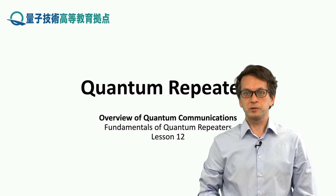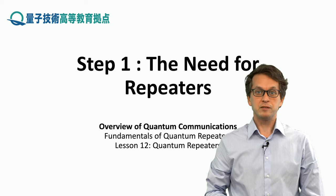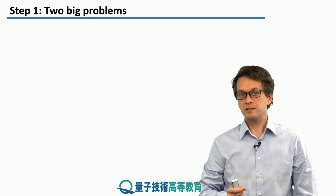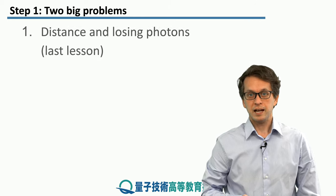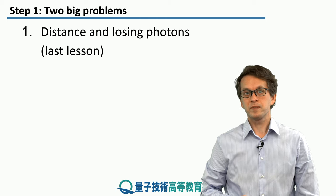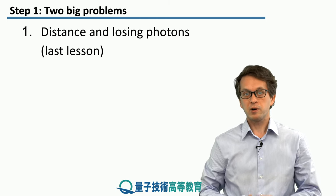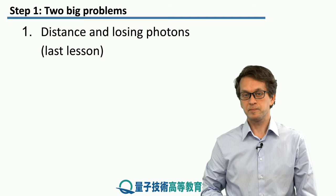Hi and welcome to lesson 12 on quantum repeaters. Step 1: The need for repeaters. In the previous lesson we have seen that there is one big problem when trying to communicate over long distances, and that's photon loss in fibers. So the further that we are trying to communicate the more likely we are to actually lose the photon, and we saw how we can handle it classically.